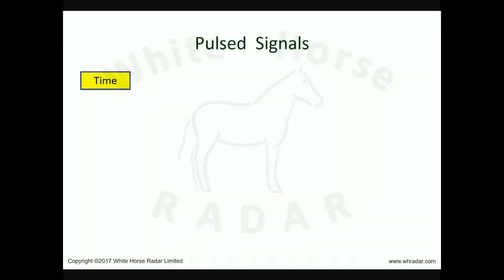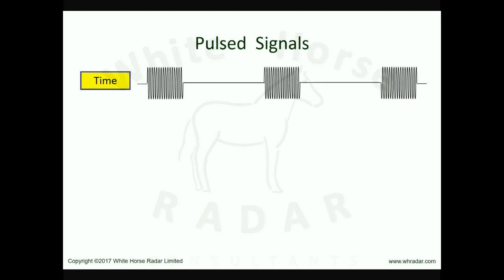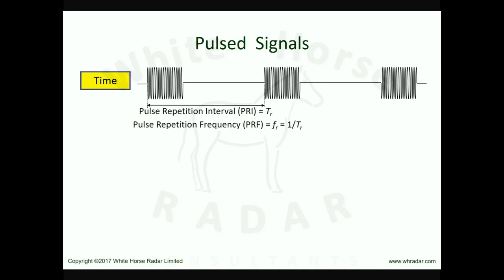We start by looking at the pulsed carrier as a function of time. Here we see a series of rectangular pulses of RF at a regular pulsing frequency. For pulsed Doppler radar, these pulses must be coherent — that is, successive pulses have a fixed phase difference that depends only on the carrier frequency and the time between pulses. This coherency must be preserved when echoes are received. We note the time between pulses, the pulse repetition interval (PRI), usually referred to as TR. Since TR is the period of the pulsed modulation, its inverse is the PRF, given the symbol FR.